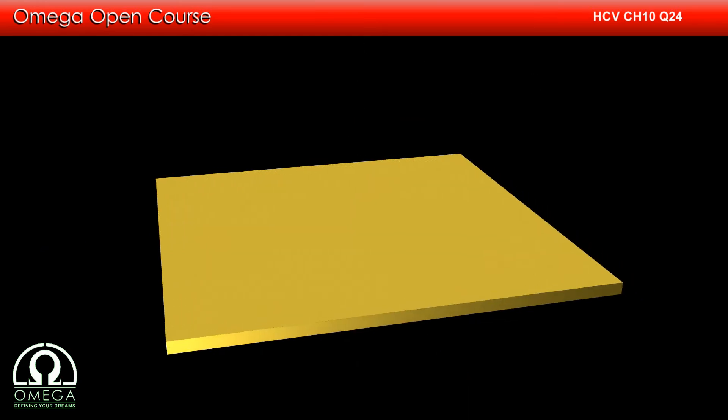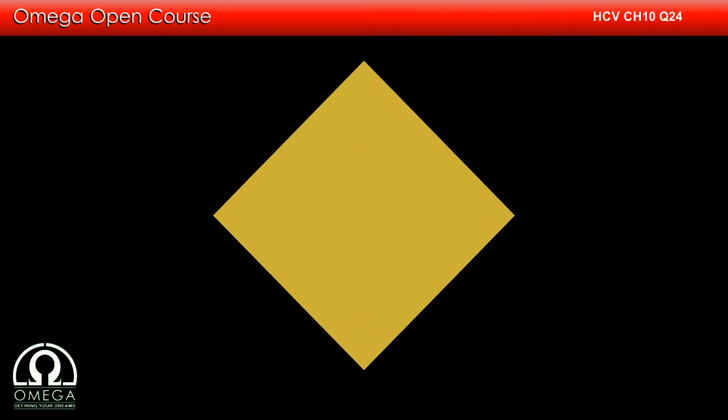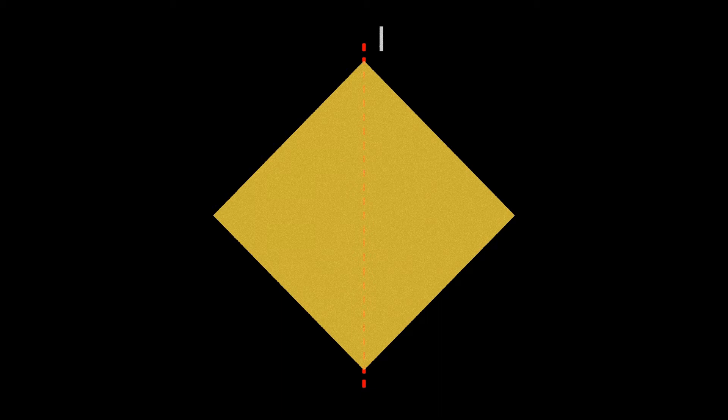Now let us assume that the moment of inertia about the diagonal of the square is i. If we take another diagonal, the moment of inertia about this axis too will be i. Since both the diagonals of the square are perpendicular to each other, we can apply the perpendicular axis theorem here.